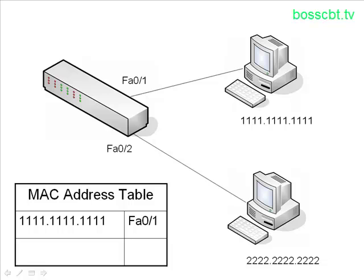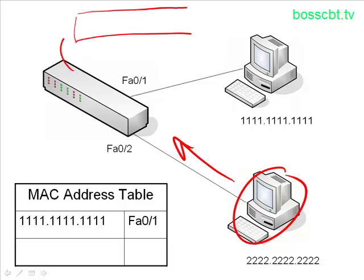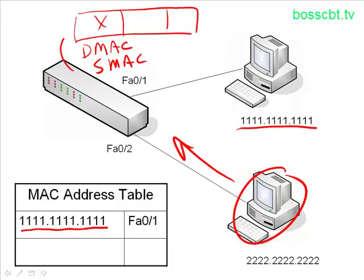PC2 creates a frame, puts it on the wire, and sends it to the switch. The switch then looks at that Ethernet frame and examines the header. It sees the destination MAC and the source MAC. First, it looks at the destination MAC — 1111, PC1. It looks at the MAC address table and says, I know that MAC address and I know where to find it. I know how to forward this frame.